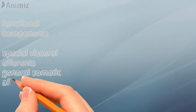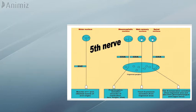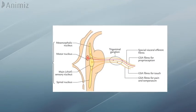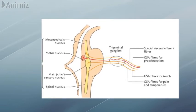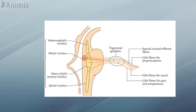Regarding the functional components of the trigeminal nerve: there are two components — special visceral efferent and general somatic afferent. The motor root arises from the motor nucleus and supplies the first arch muscles — muscles for mastication: temporalis, masseter, and medial and lateral pterygoids. The three sensory nuclei are responsible for different sensations: the mesencephalic nucleus for proprioception, the main sensory nucleus for touch, and the spinal nucleus for pain and temperature.